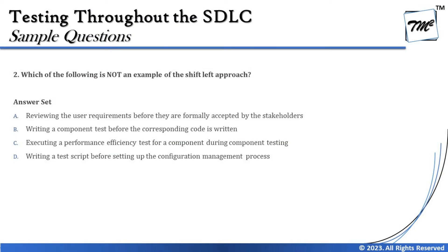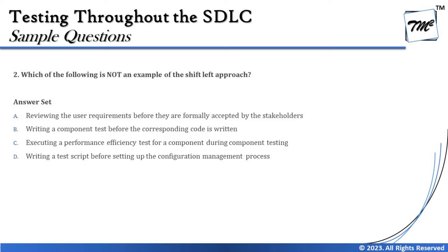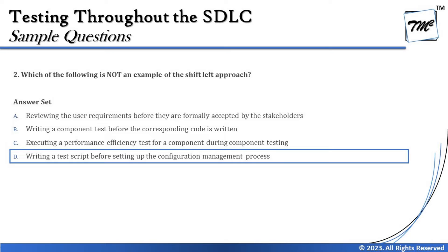Option D says writing a test script before setting up the configuration management process. Configuration management executes your tests, and you will have to write the tests first before putting them into the pipeline. Writing scripts before setting up the pipeline is not pre-poning — it's just the generic process. So the right answer is D: writing a test script before setting up the configuration management process is NOT an example of the shift left approach.